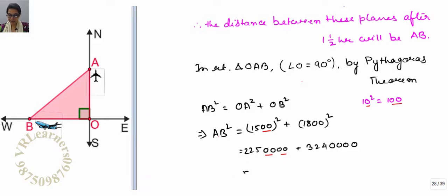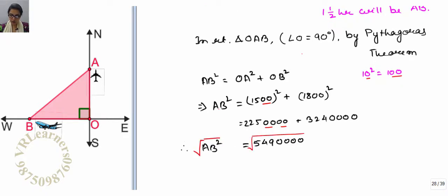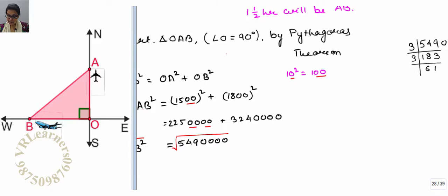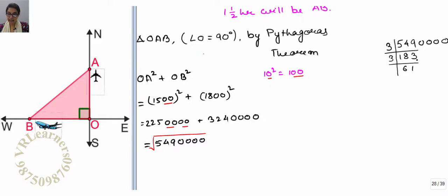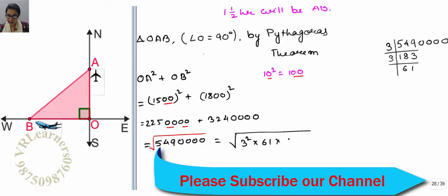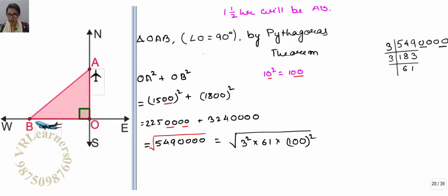Add this, equals to 549 and four zeros. Now calculate, this is root. So now calculate, square root of this. This is hundred squared.